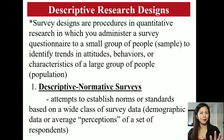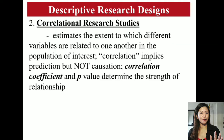The descriptive normative survey design attempts to establish norms or standards based on a wide class of survey data such as demographic data or average perceptions of a set of respondents. The correlational design estimates the extent to which different variables are related to one another in a population of interest. Note that the term correlation implies prediction but not causation.